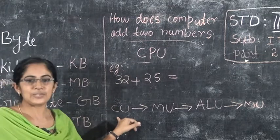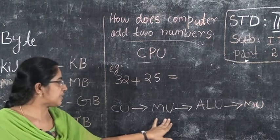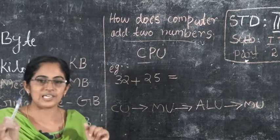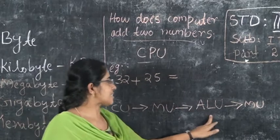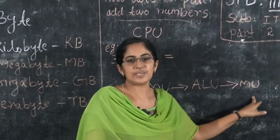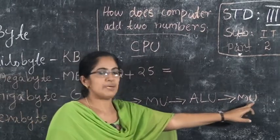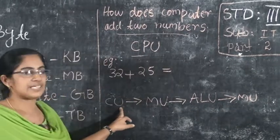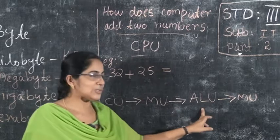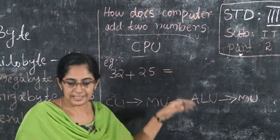The control unit takes the data and sends it to the memory unit. The ALU performs all calculations. The ALU will add the two numbers, then send the result to the memory unit where it is stored. The final result — 57 — is obtained.